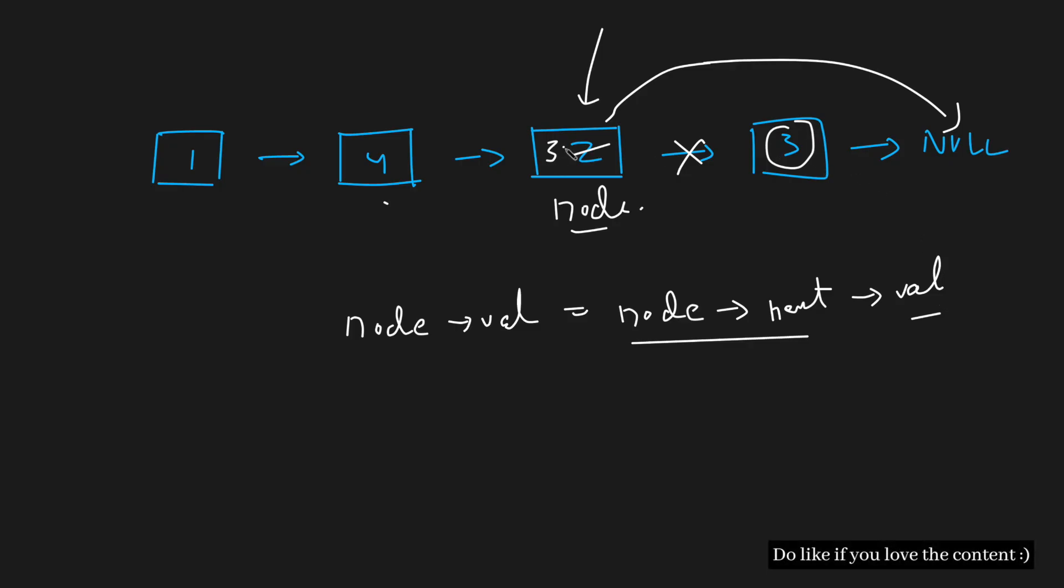So what I do is I assign this three to this two, and after this what I do is I can say node's next is going to be pointing to node's next next. So in this way I copy the value and I have new links. So these two lines will actually delete a node. Looks a dumb solution but I cannot help.